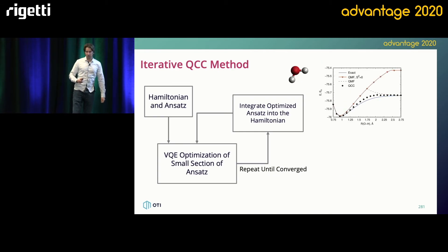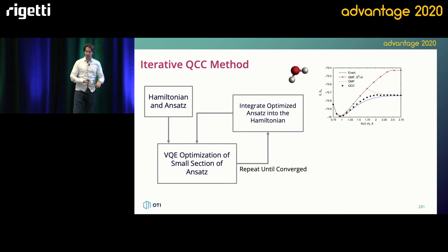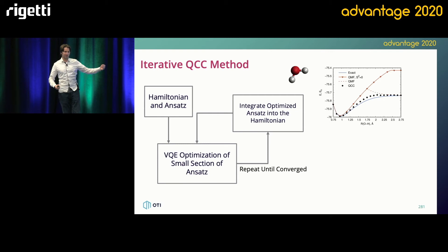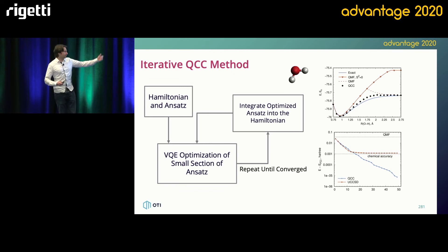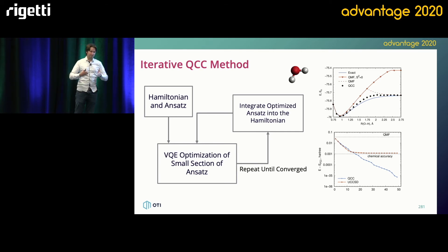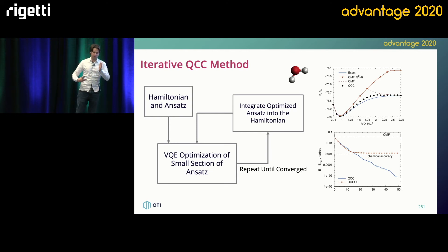So what are we going to do? We're actually going to run each entangler set independently on the quantum computer. After we optimize the first entanglement set, we're going to integrate it back into the Hamiltonian, so the Hamiltonian will eventually expand. In the worst case scenario, especially with very diffuse systems, the Hamiltonian can scale almost exponentially unless you prune it. But this enables you to — as shown in a simulation done on Rigetti for water — approach chemical accuracy so long as we simulate in small chunks. We're kind of bypassing the issue of having to dump all the circuit depth on a quantum computer. You don't have to simulate each entangler independently; you can group them, simulate them as a group, then load them back onto the Hamiltonian.